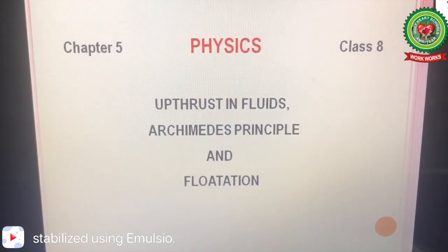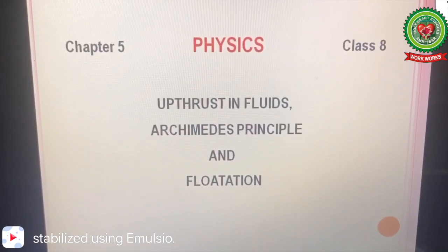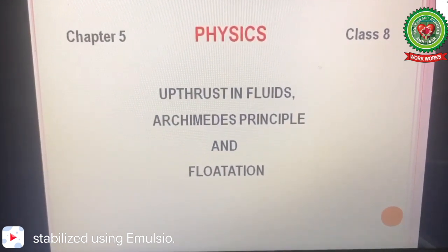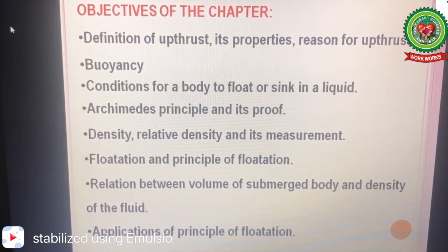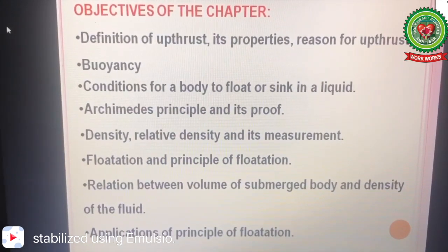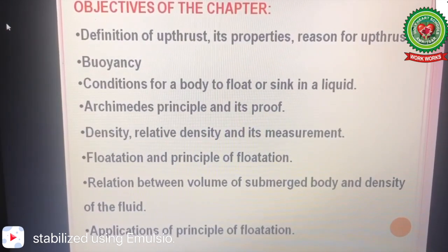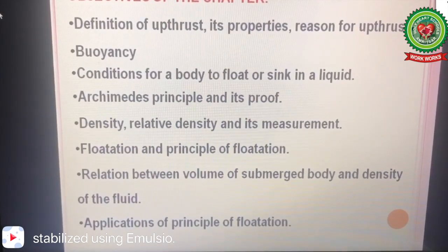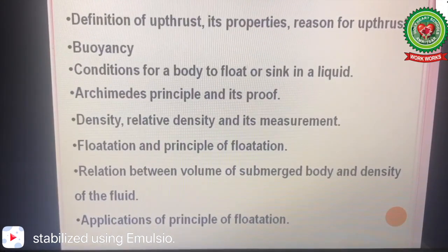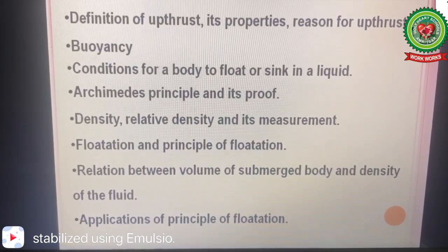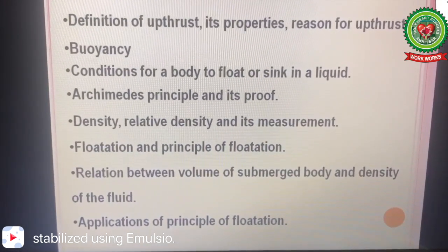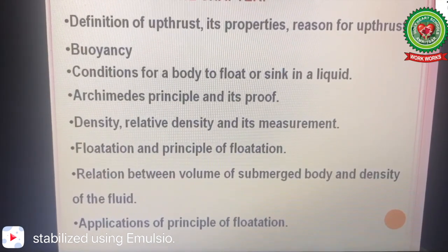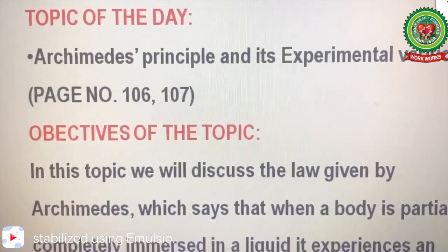Hello children, we are doing chapter number five of your physics book, class eight. The name of the chapter is 'Upthrust in Fluids, Archimedes Principle and Flotation.' The objectives of the chapter include definition of upthrust, its properties, reason for upthrust, buoyancy, conditions for a body to float or sink in a liquid, Archimedes principle and its proof, density, relative density and its measurement, flotation and principle of flotation, and relation between volume of submerged body and density of the fluid.